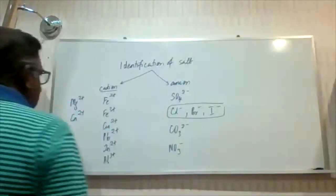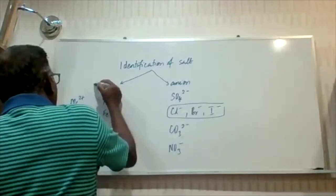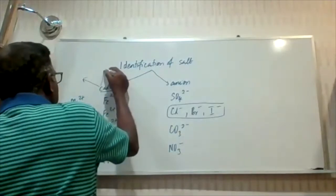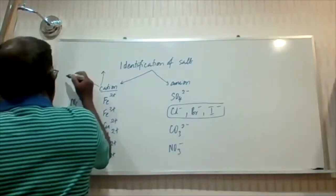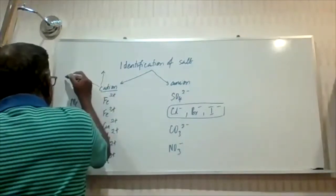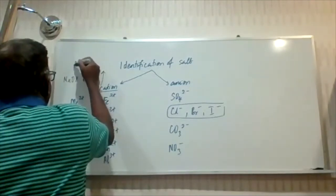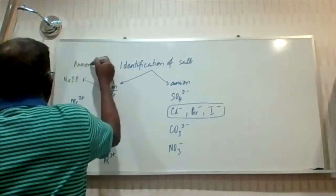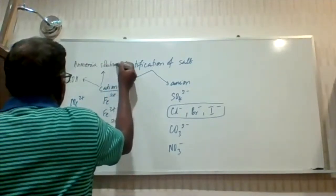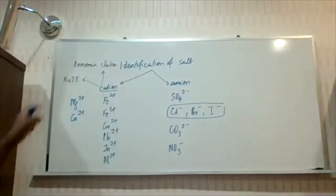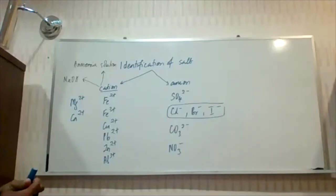Under the concept of identification of salt, for the cation, we have its own set of reagents we use. The reagents that we use to identify the cations will be sodium hydroxide and ammonia solution — not ammonia liquid. It's not ammonia liquid; that is different. This is ammonia solution, and you will refer to it as ammonia solution.